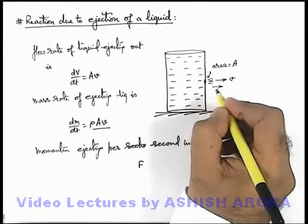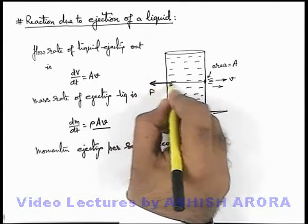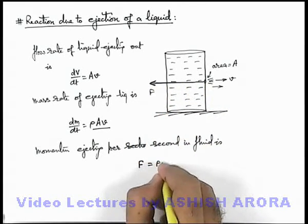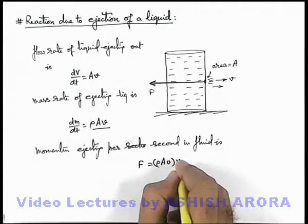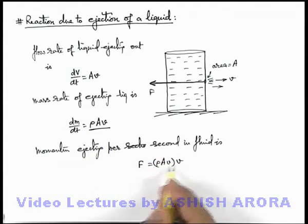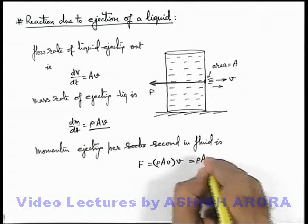The container will experience a reaction force in backward direction. This force can be written as ρAv multiplied by the speed, because the mass rate of ejection multiplied by velocity is the rate at which momentum is ejecting out. This is ρAv².